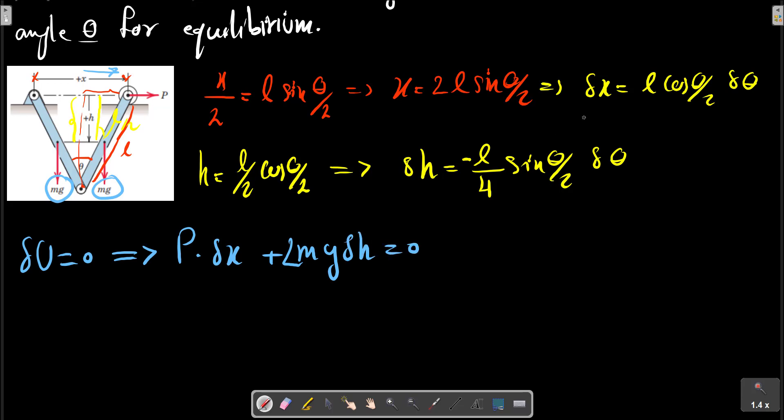Substituting these relations we have P times l cos theta minus mgl over 2 sin theta, all times delta theta equals zero.